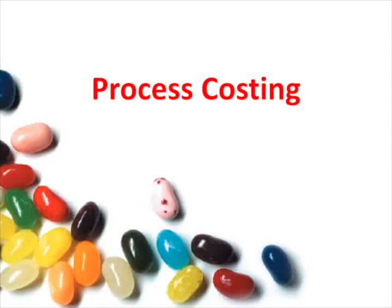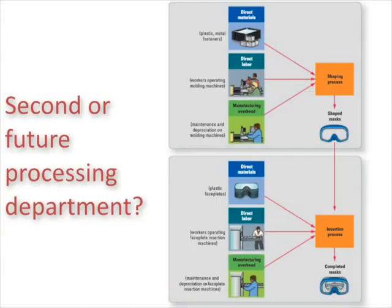Up to this point in our process costing series we've discussed process costing within the first processing department. However, we need to discuss how costs flow from one processing department to the next. In our example we were talking about ski masks and how costs in the shaping process, that first department, are allocated to each unit produced. What happens when those costs are transferred from the first department to a second or future processing department? It's slightly different and we're going to see how that works.